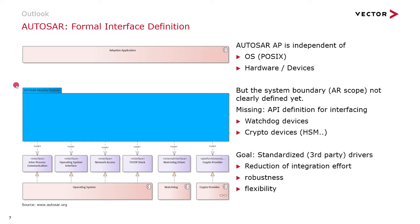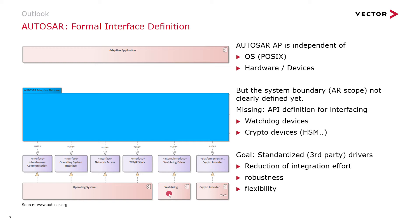Another discussion in AUTOSAR is the formal interface definition — what is the actual scope of the Adaptive Platform? On the top we have adaptive applications, which are out of scope. We have the platform itself, and on the lower end we have the operating system, but also other drivers such as a watchdog driver or a cryptographic routine provider for the HSM. Up to now it was not clearly defined where the boundary lies. In future, we hope it will be clearly defined that these kinds of drivers will not be part of the Adaptive Platform.